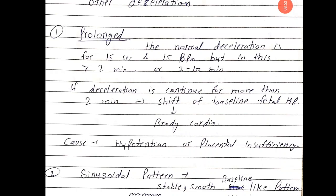Now let's look at some other decelerations. First is prolonged deceleration: normal deceleration lasts 15 seconds, but prolonged deceleration lasts more than 2 minutes and can continue for 2 to 10 minutes. If the deceleration continues for more than 2 minutes, there is a shift in baseline fetal heart rate, which is called bradycardia.